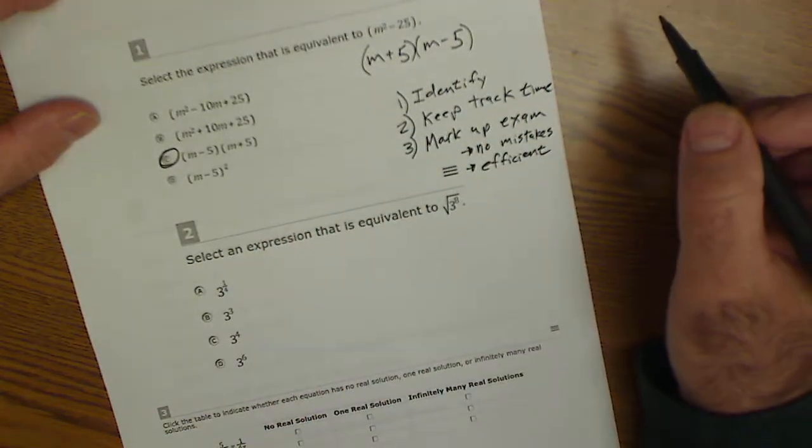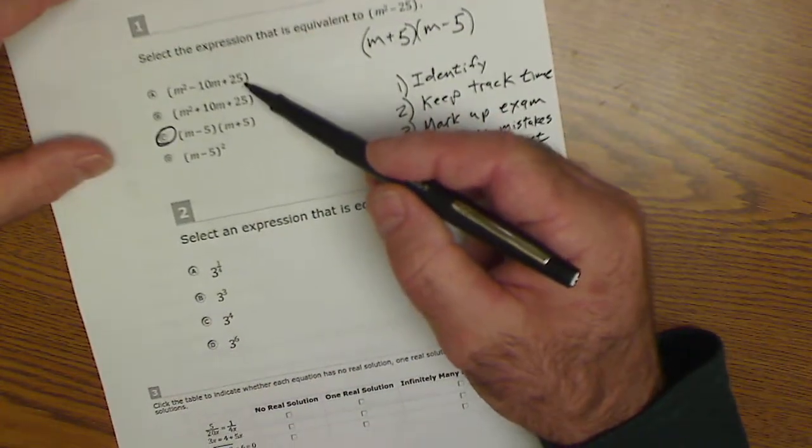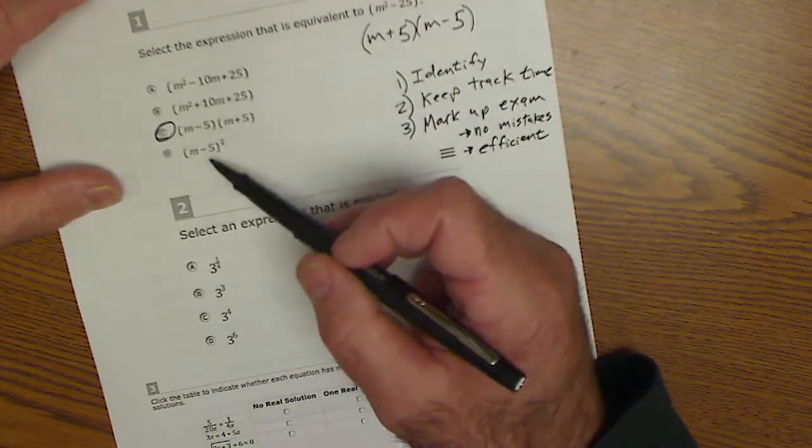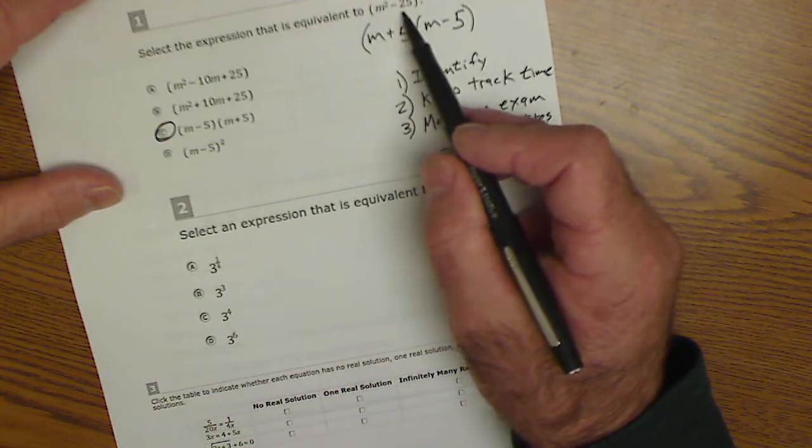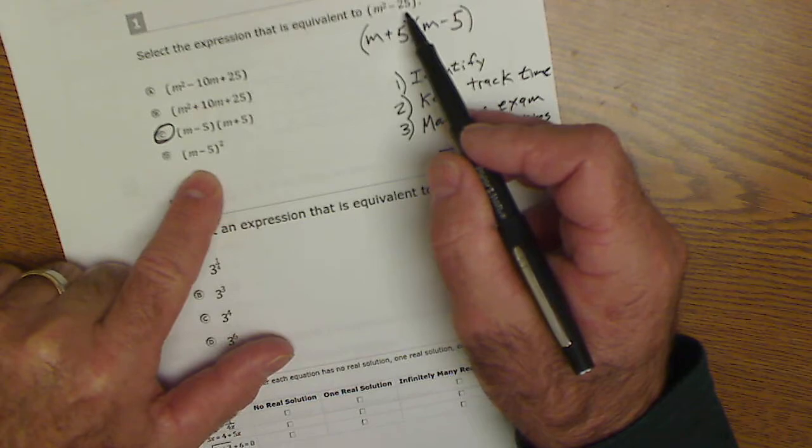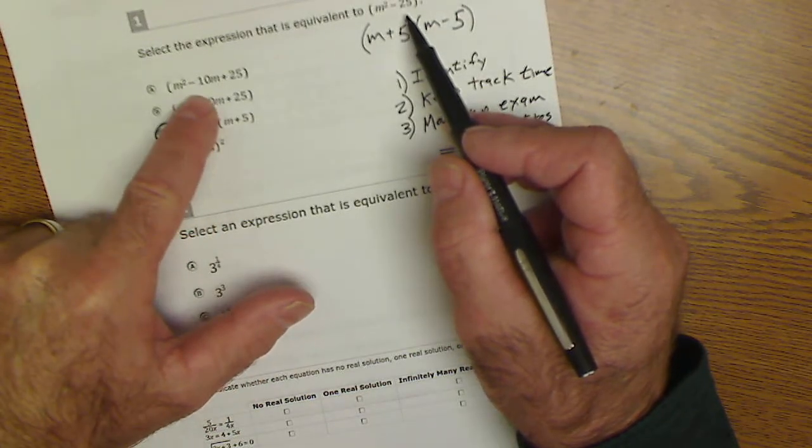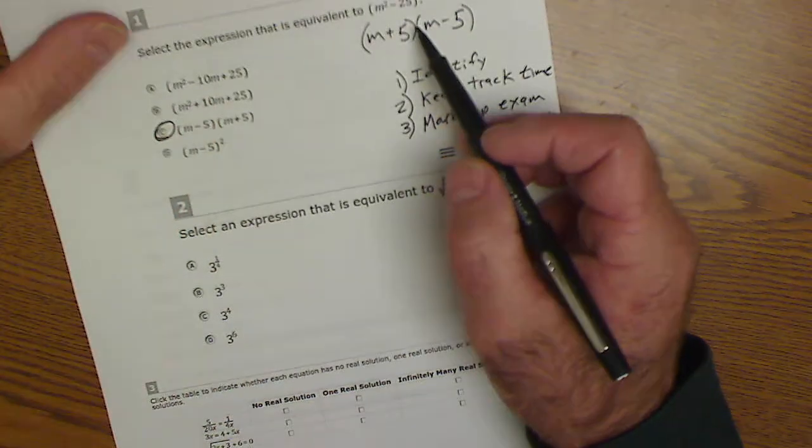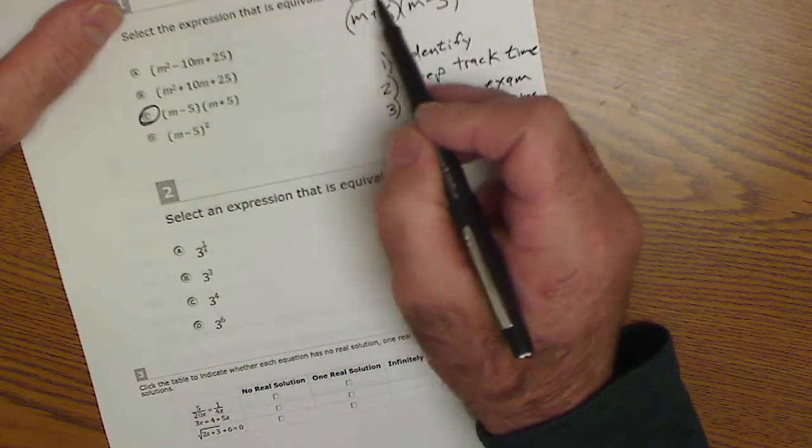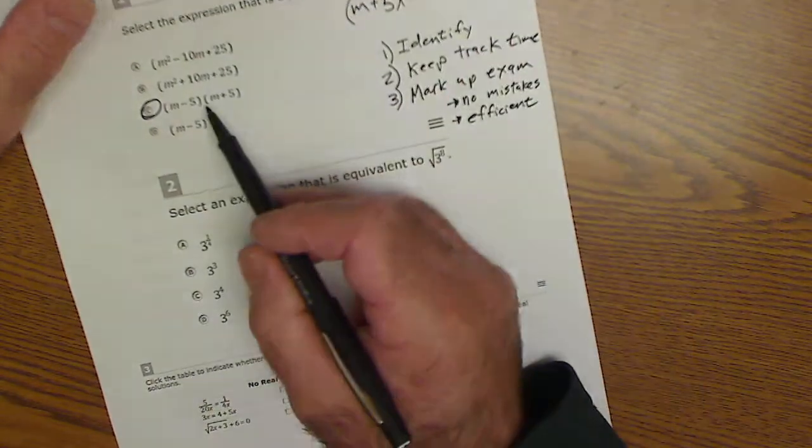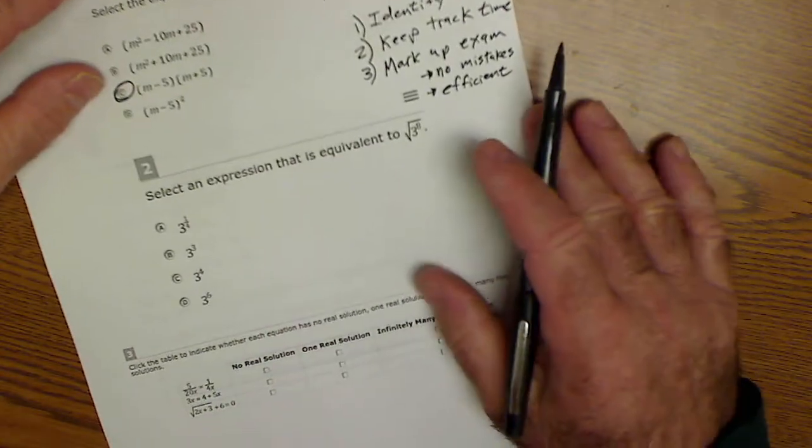And none of the other ones make any sense. And as I look at the other solutions, I can see their intent is to see whether or not you knew it was a perfect square, right? This is going to have a middle term. This has a middle term. That has a middle term. So if you recognize this as a perfect square problem, then there's really only one possible solution.